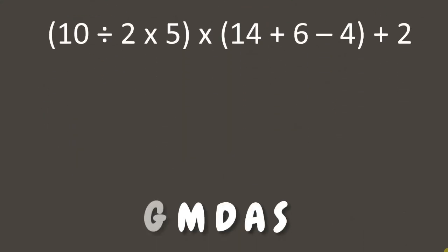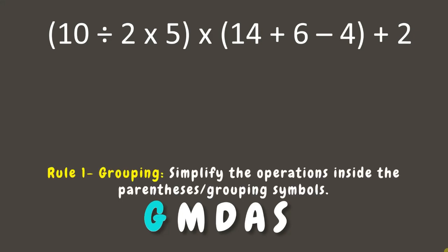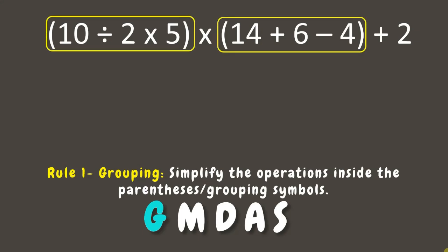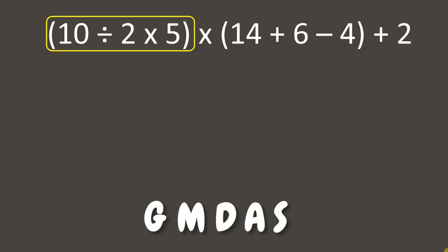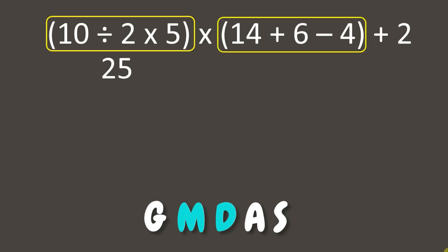First, let's solve everything inside the grouping symbol. Here we have expressions grouped in parentheses. Let's solve 10 divided by 2 times 5. We see two operations here: multiplication and division. Since division comes before multiplication from left to right, we first divide 10 by 2, which gives us 5. Then we multiply 5 by 5, resulting in 25.